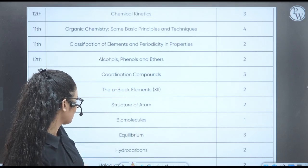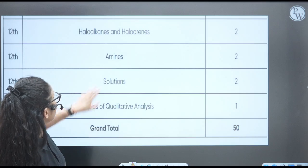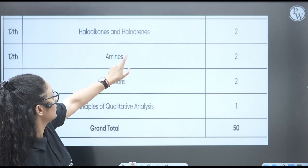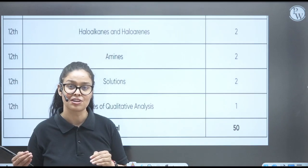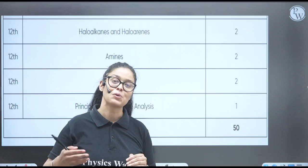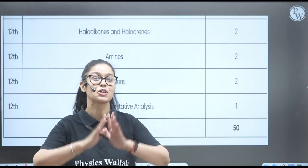Equilibrium, three. Hydrocarbon, two. Then we have haloalkene and haloarenes, two. Amines, two. Solution, two. Principles, one. So this was the distribution of the questions for chapter-wise in the chemistry.